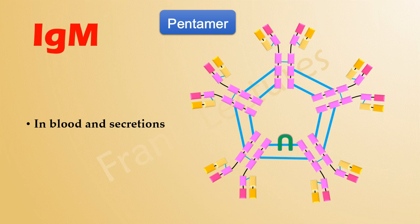These monomeric units are held together by a J-chain. J stands for joining, and it is a glycoprotein. This J-chain is responsible for the polymerization of IgM into a pentamer.